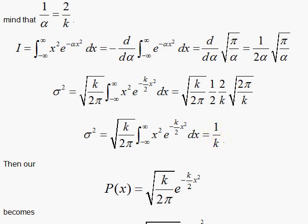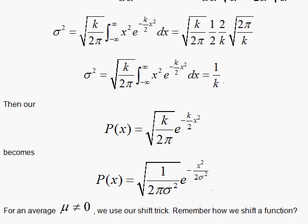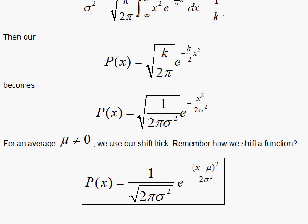We can write our general result like this. However, mu is not equal to zero in all cases. In the most general case, we'll do the shift trick to shift the function to the right so it can be centered on some non-zero mu. We do that by replacing x with x minus mu. There you have the most famous Gaussian in one dimension, so important in statistics.